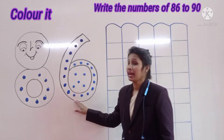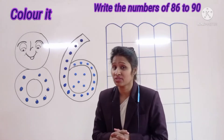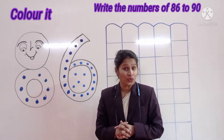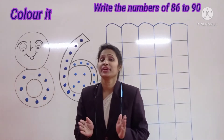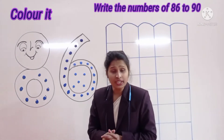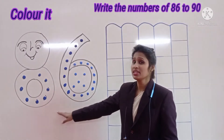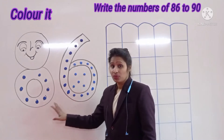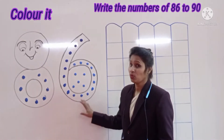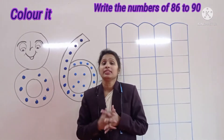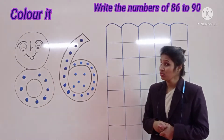Okay, and thereafter try the numbers of 86 to 90. So first of all, color the number 86. Which number is this? This is number 86. First, we need to color 86, and thereafter write the numbers of 86 to 90.